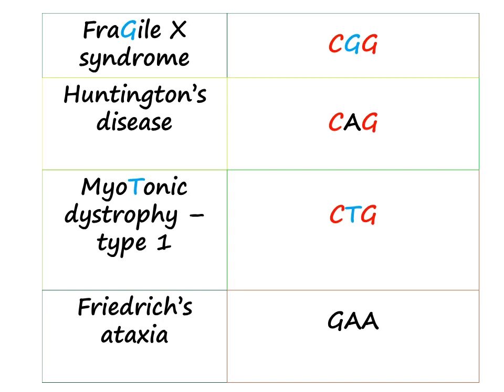For trinucleotide repeats, there are four diseases. The first three — Fragile X, Huntington's, and myotonic dystrophy — are a group. Friedreich's ataxia is separate because it's the only one starting with G and ending with A; the others start with C and end with G. Friedreich's ataxia repeat is GAA. Fragile X middle letter is G, so it's CGG. Myotonic dystrophy middle letter is T, so it's CTG. Huntington's — 'hunt-HA' sounds like A, so it's CAG.